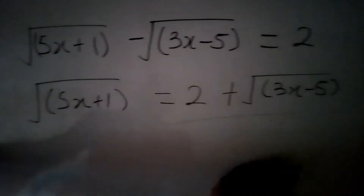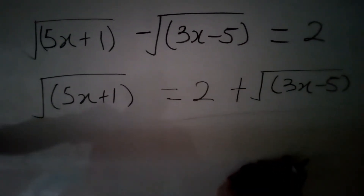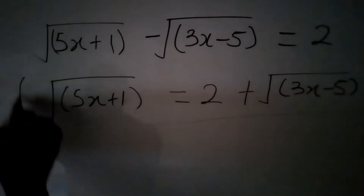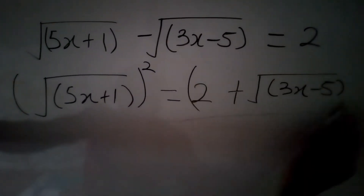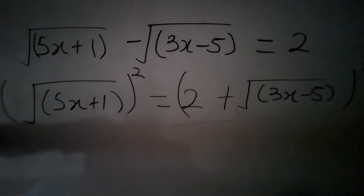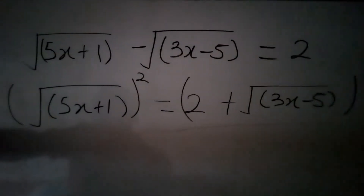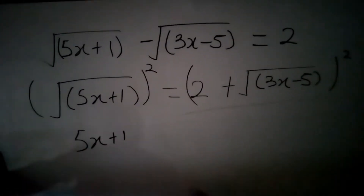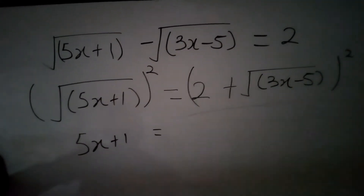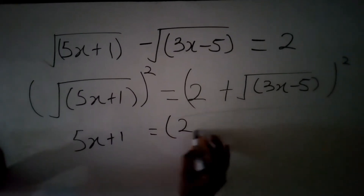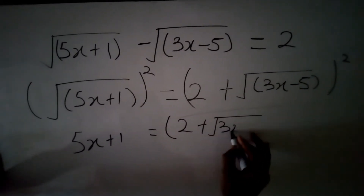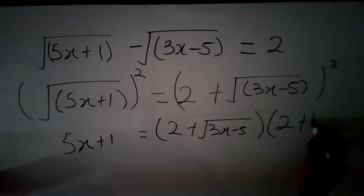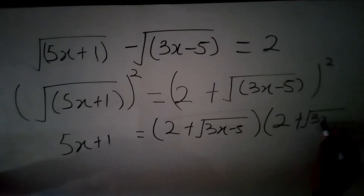In mathematics, we have to deal with the square root sign — we have to introduce a square. So we square both sides of the equation. The square cancels the square root sign on the left, leaving behind 5x plus 1. On the right, we are expanding: 2 plus the square root of 3x minus 5, multiplied by itself, giving us 2 plus the square root of 3x minus 5.